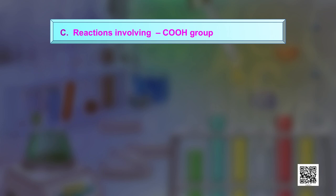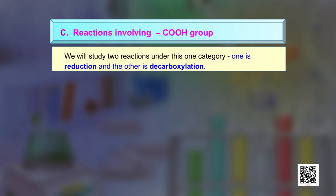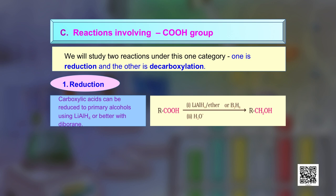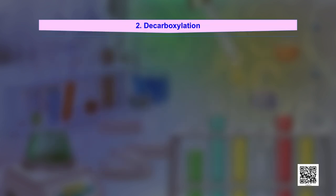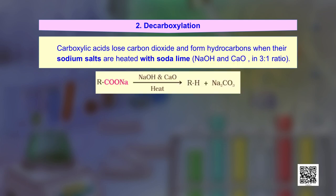The third category of reactions involves the -COOH group itself. The first reaction is reduction: carboxylic acids can be reduced to primary alcohols using lithium aluminum hydride (LiAlH₄) or diborane. Diborane does not reduce other functional groups such as esters, nitro groups, or halo groups present in a molecule. Sodium borohydride does not reduce the carboxyl group. The second reaction is decarboxylation: carboxylic acids lose CO₂ to form hydrocarbons when their sodium salts are heated with soda lime (NaOH:CaO, 3:1).